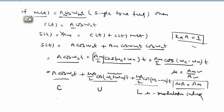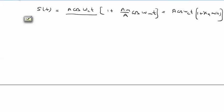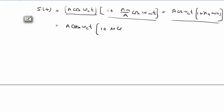Mu (μ) is the ratio of message signal amplitude to carrier magnitude. The upper sideband is denoted by (ω_C + ω_M) and the lower sideband by (ω_C - ω_M). Taking common factors from the expression, the AM waveform reduces to: A cos(ω_C t) [1 + μ cos(ω_M t)]. This is our basic AM waveform.